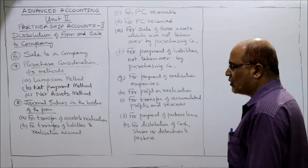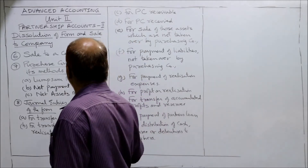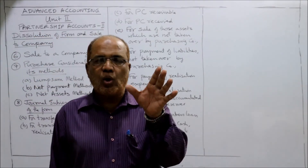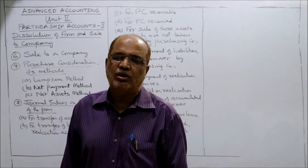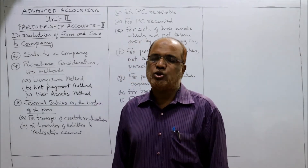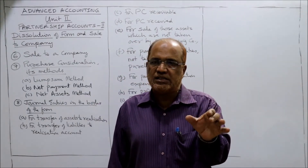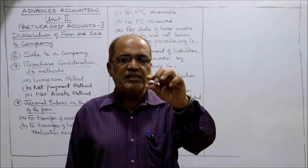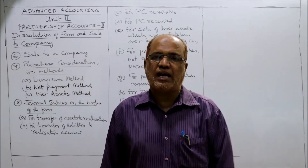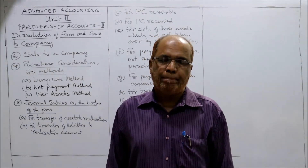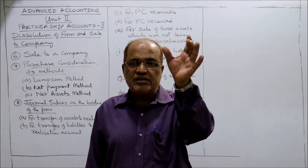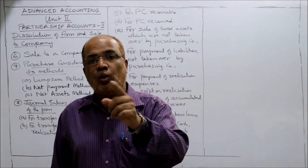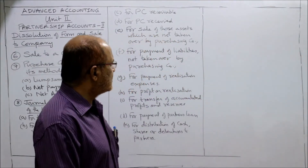After passing these seven entries, we close the realization account. If the credit side is more than the debit side, there is a realization profit — entry: Realization Account debit to all Partners' Capital Account in the profit sharing ratio. If there is a loss: all Partners' Capital Account debit to Realization Account in the profit sharing ratio.